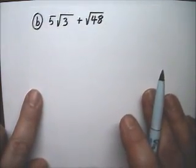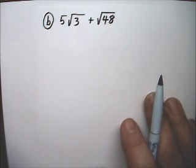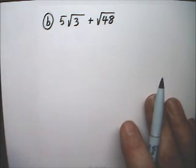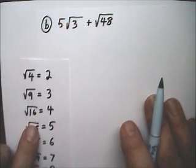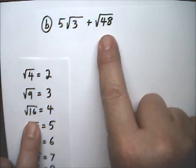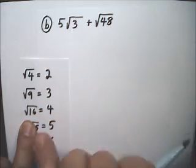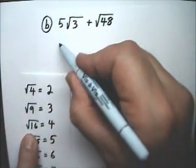Let's see. Example B. We have 5 radical 3 plus radical 48. And to simplify this, we have to find something to split 48 into. And 48 is 16 times 3.